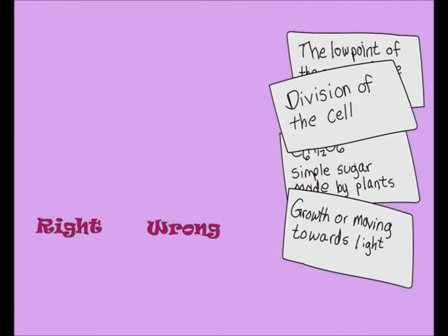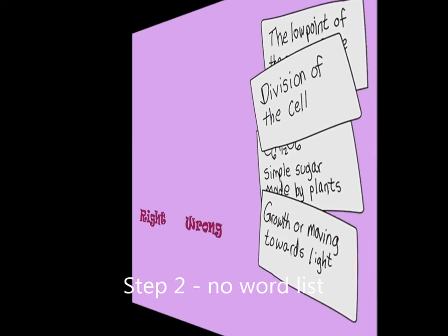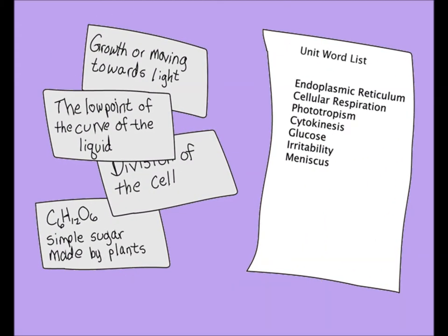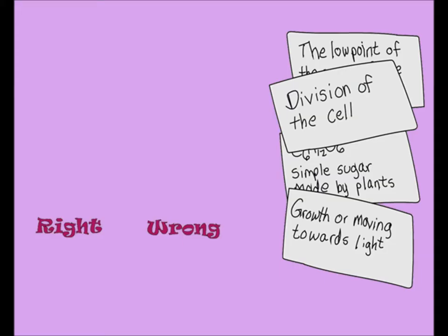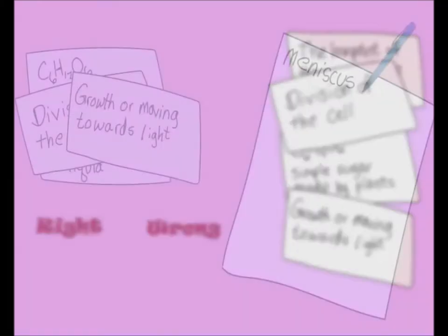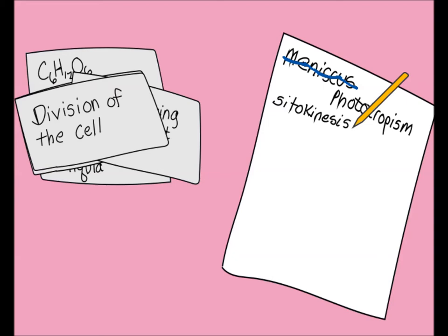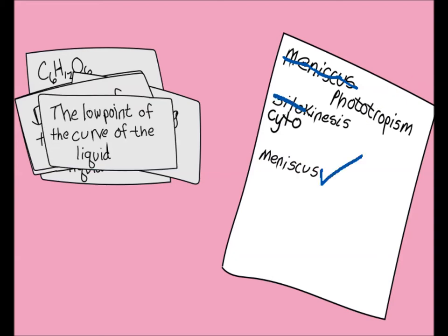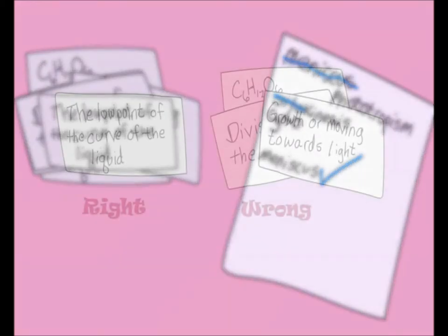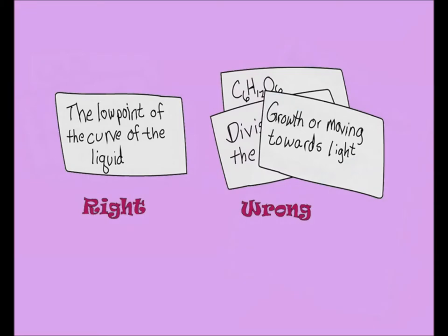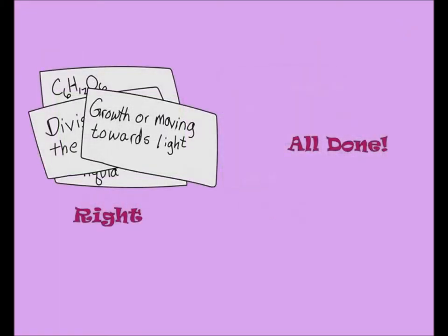For step two, get rid of the word list. If you're starting step two at the beginning of a new study session, go through one more time matching with the list just to refresh your memory. For step two, your goal is to get through the cards and give the word from memory. This step is actually a good one to write out the answers on a scratch sheet of paper — this helps to learn the spelling and simulate testing. No matter how you get through the cards, just like step one, you should always go back through them until you get all the words correct.